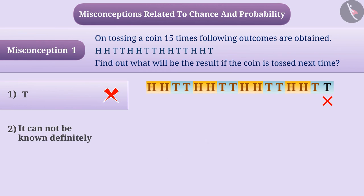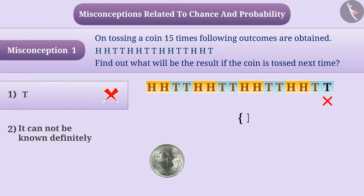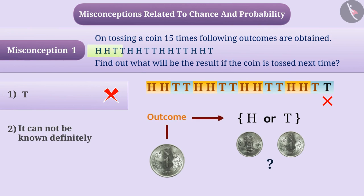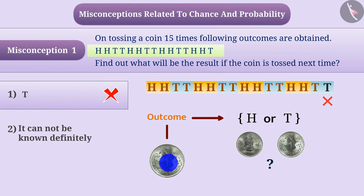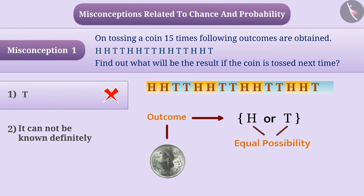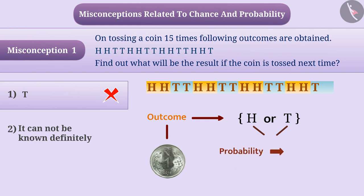Keep in mind that after tossing a coin, it cannot be said certainly that we will get a head or tail. The outcome will neither depend on any pattern nor on earlier observations. The coin is tossed any number of times, but in every case there is equal possibility of getting head or tail. That's why we say that the probability of getting each outcome, head or tail, is 1 by 2. So here the correct answer is option 2.